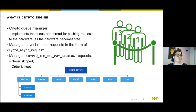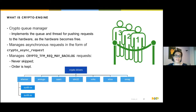So CryptoEngine is a queue manager. It manages asynchronous requests in the form of a crypto async request. It supports SKCipher, AKCipher, AEAD, and hash requests. More importantly, CryptoEngine manages all crypto transformations that request backlogging — that means they have the CryptoTFM backlog flag set. The purpose of the backlog is to make the crypto request reliable. Without the backlog flag, if the hardware queue is full, the request will simply be dropped, which is appropriate in the network case with IPsec, for example.